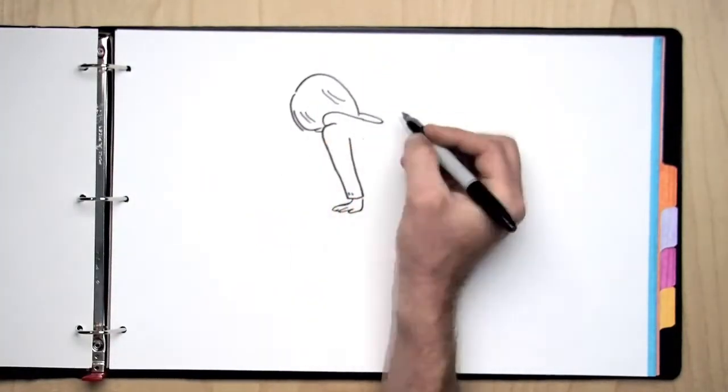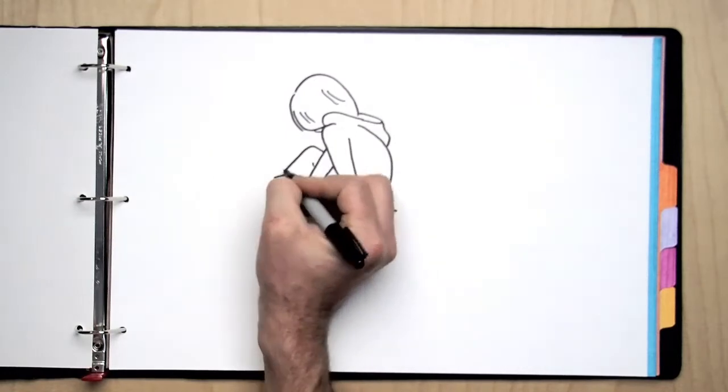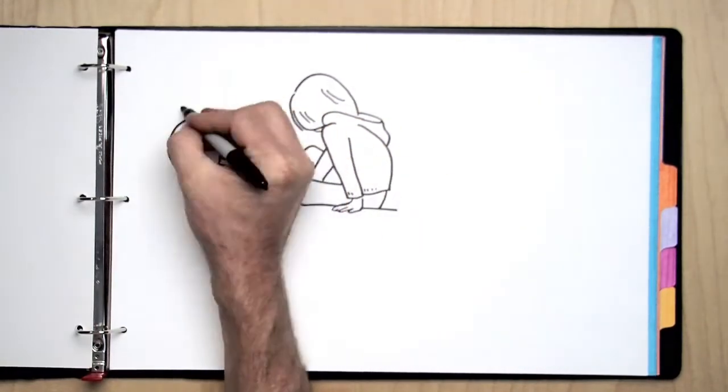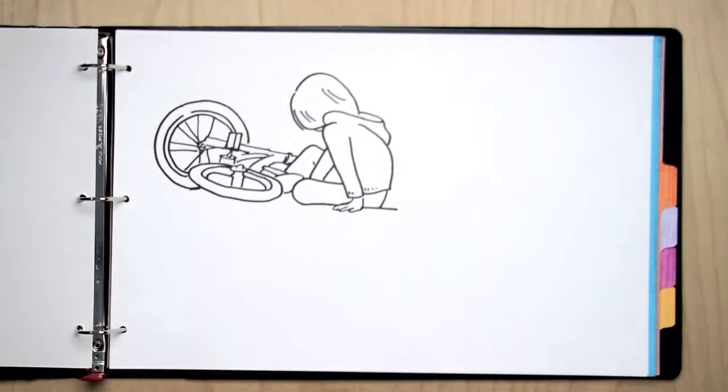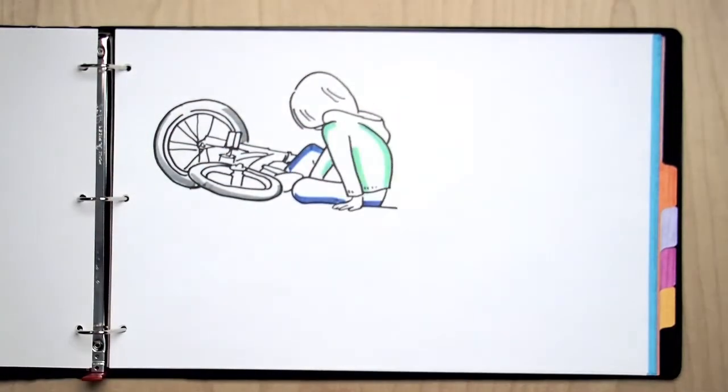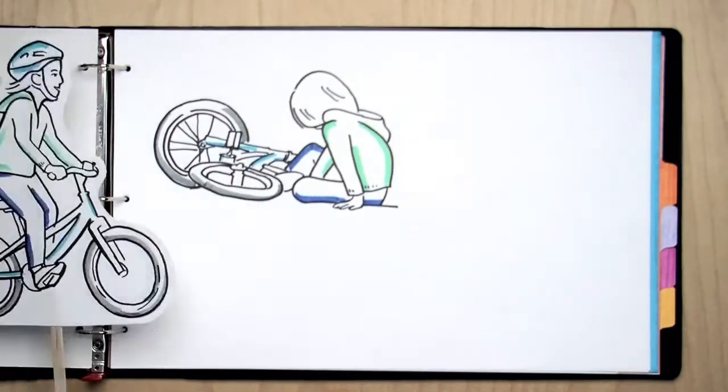You see, what we sometimes call failure is simply another step in the learning process. Since proficiency systems don't penalize us for making mistakes along the way, we can take risks and learn more. After all, none of us knew how to ride a bike the first time we got on it, right?